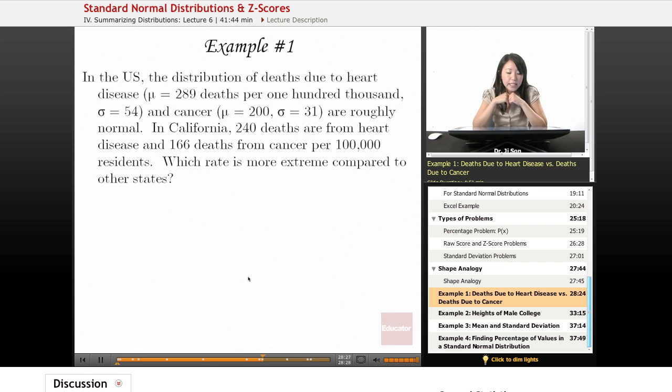Now let's do some problems. Here's example one. In the US, the distribution of deaths due to heart disease is 289 deaths per 100,000 with a standard deviation of 54, and cancer has a mean of 200 with a standard deviation of 31. These are roughly normal.